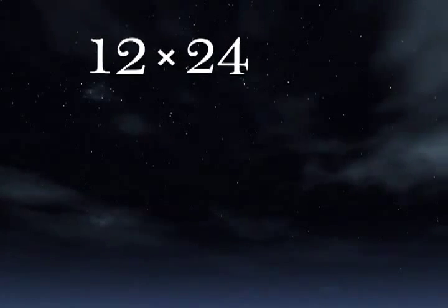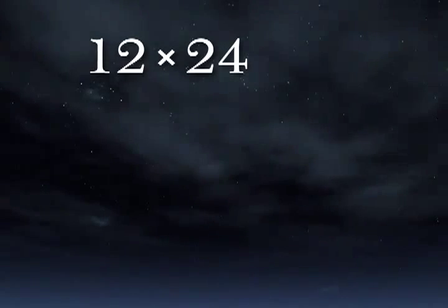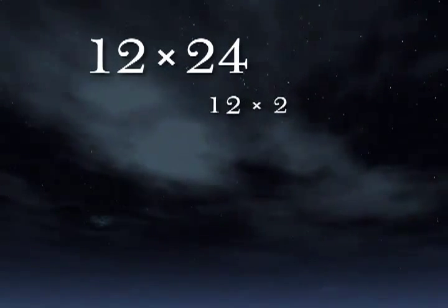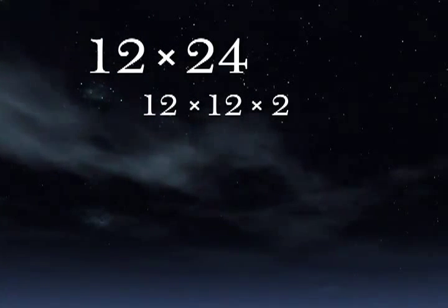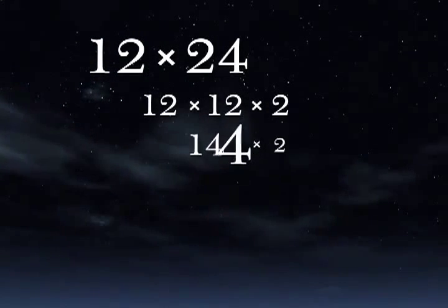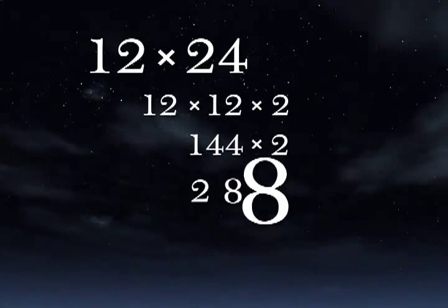What's 12 times 24? Well, 24 is 12 times 2. So you can look at this problem as 12 times 12 times 2. And that's 144 times 2, which is 288.